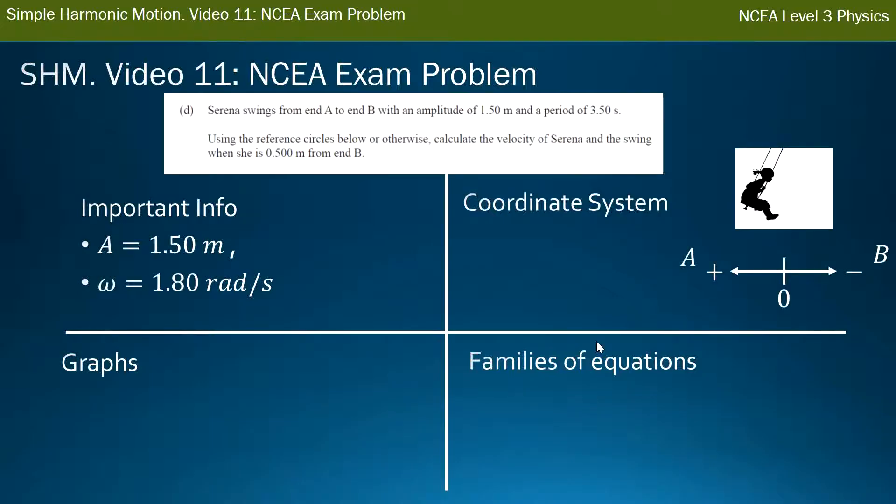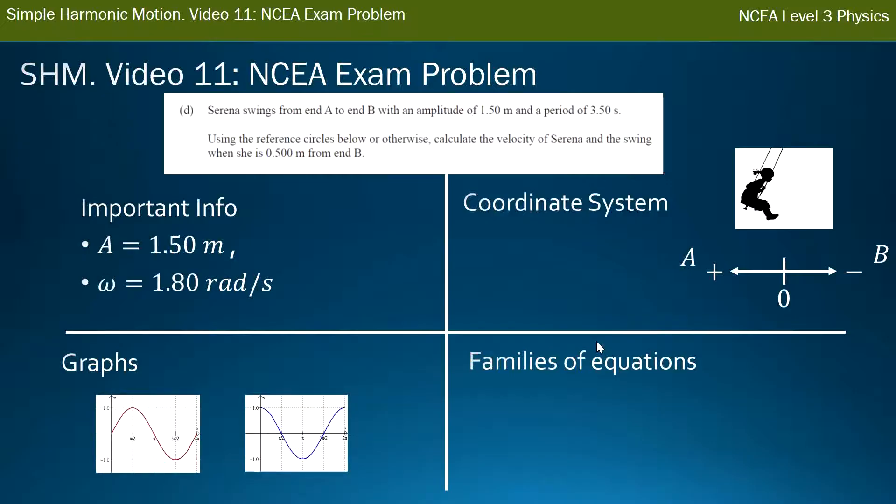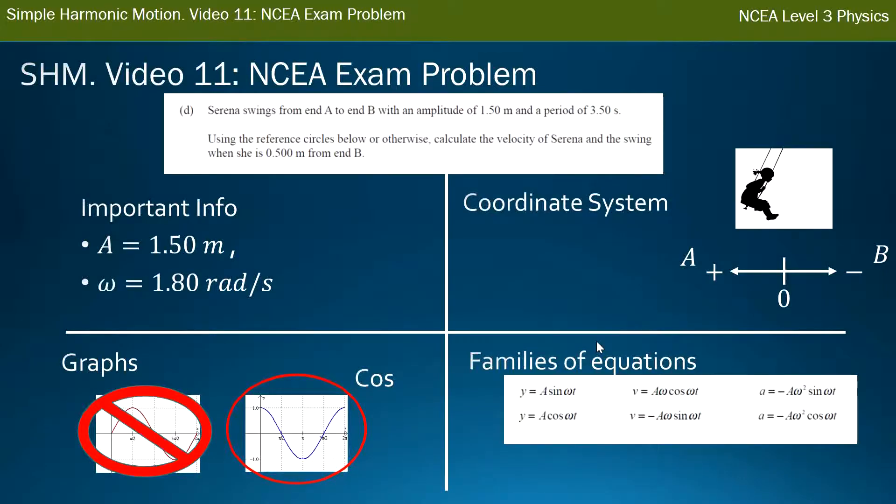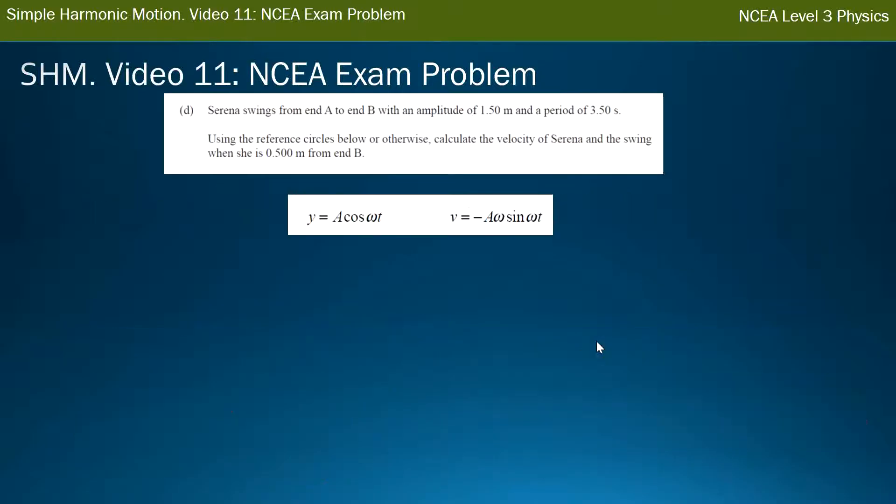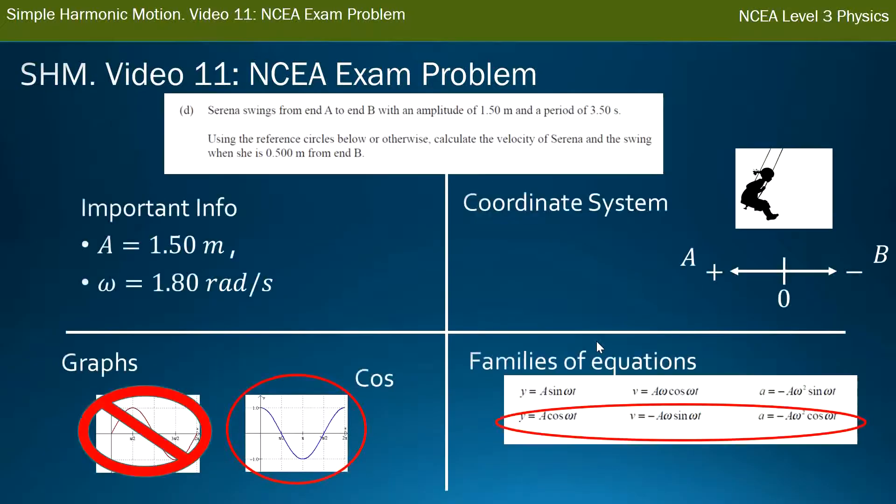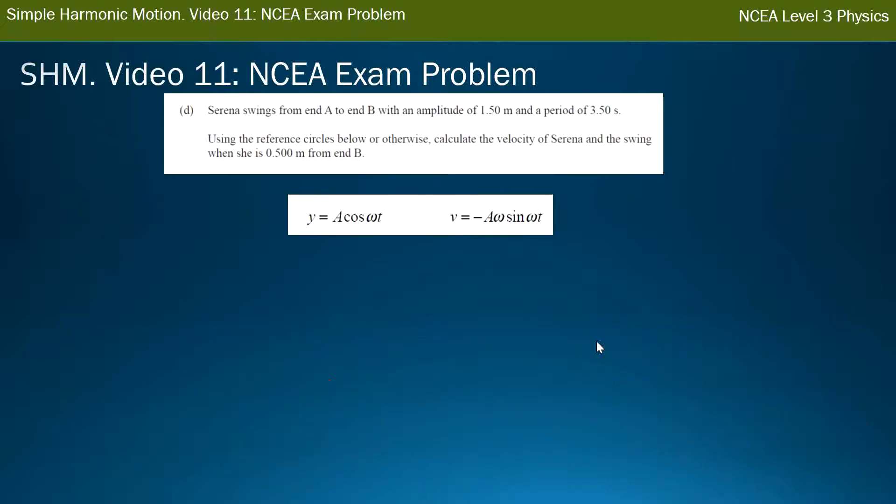The next is my coordinate system. So I've just sketched a little girl on a swing here, and see that A is starting from the left, and B is on the right. I've decided to call A positive, and B negative, and zero is always in the middle. Okay? Doesn't matter what you choose, as long as you're consistent. I've got both my graphs here. A sine graph starts in the middle, and a cos graph starts at one of the extremes. I definitely have this girl starting at one of the maximum displacements, not in the middle. So I have a cos graph, and then I use that with my families of equations. Which family starts with the cos? It's the bottom one. So that's the equations I'll be using. I don't need acceleration. So when I move on to the next one, you'll see I'll just kind of crop that off the picture. So these are the two, the displacement and the velocity from that bottom family. Like I said, I dropped acceleration.